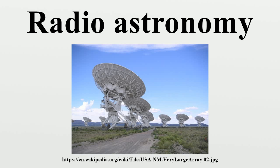Grote Reber was inspired by Jansky's work and built a parabolic radio telescope nine meters in diameter in his backyard in 1937. He began by repeating Jansky's observations, and then conducted the first sky survey in the radio frequencies.